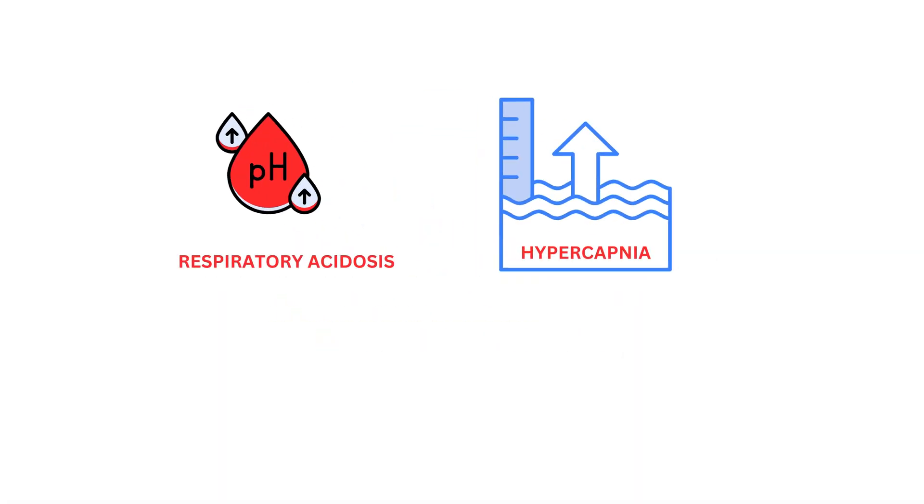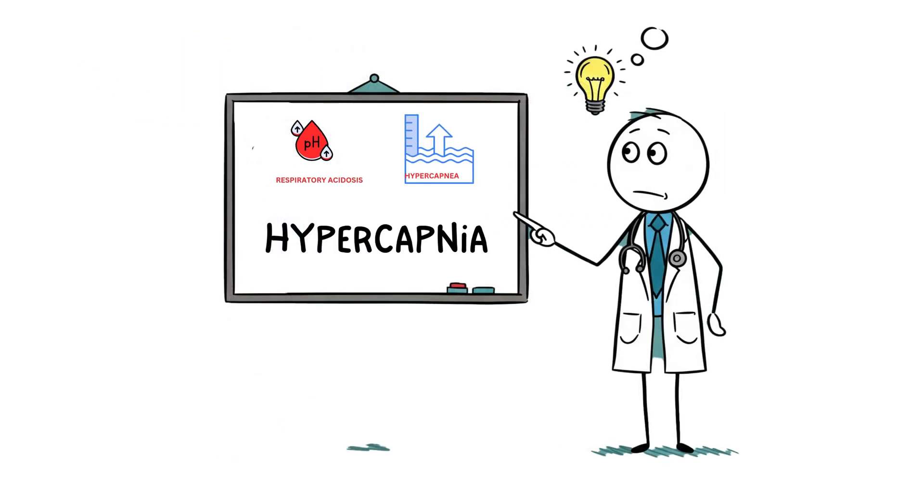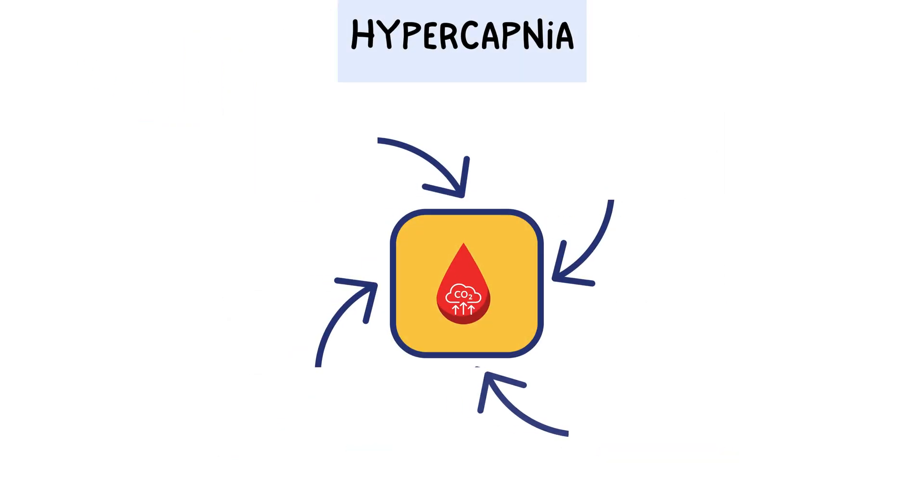So, what happens when this delicate balance is thrown off? Well, before we get into the what, we should really understand the why. Why does hypercapnia happen in the first place? Several factors can contribute to a build-up of CO2 in the blood.